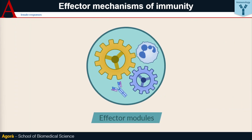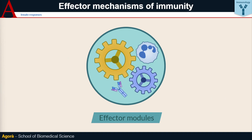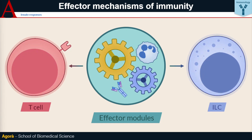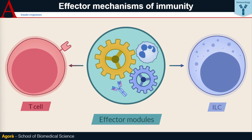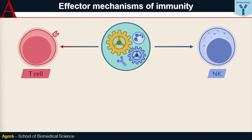These effector modules span innate and adaptive elements. For example, it has been found that subtypes of innate lymphocytes — ILCs — are similar in their dynamics to the helper T cell subtypes of adaptive immunity. Similarly, the cytotoxicity mechanism of innate NK cells closely resembles that of adaptive cytotoxic T cells.